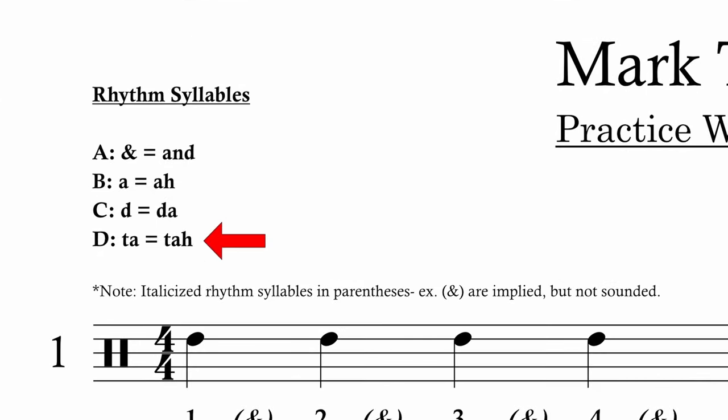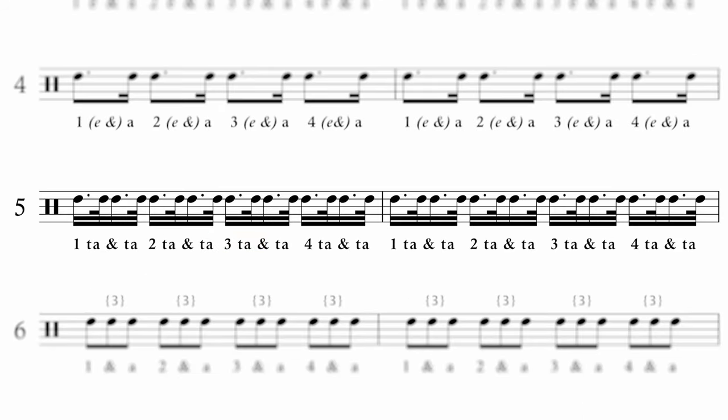Back to the top — letter D equals TA, T-A. Sounds like TAH. Look down at line five and you're going to see the dotted sixteenth thirty-second notes. These are: one TA AND TA, two TA AND TA, three TA AND TA, four TA AND TA. Okay, so that's the glossary, and that's how you're going to pronounce those.